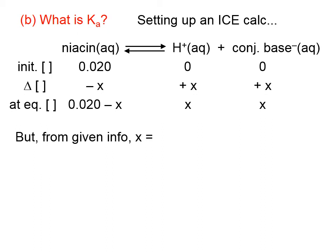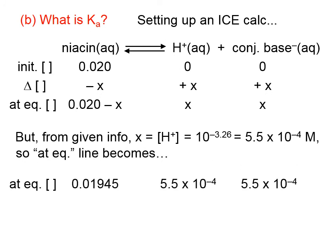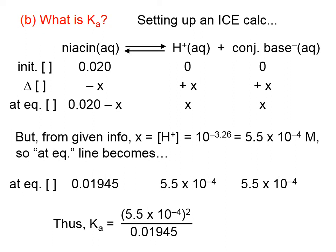From the given pH, we can figure out the hydrogen ion concentration, so the value of x is 5.5 times 10 to the negative fourth. At equilibrium, the niacin concentration is 0.02 minus 5.5 times 10 to the negative fourth, which gives 0.01945. The Ka value is simply products over reactants: (5.5 × 10⁻⁴)(5.5 × 10⁻⁴) divided by 0.01945, and we can calculate the Ka value for niacin.